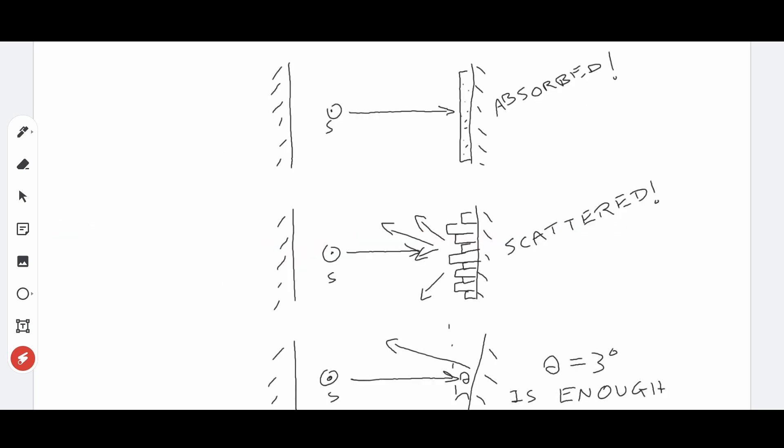There are a few ways to work around this. Absorbing only one of the parallel surfaces can stop the flutter echoes from happening. Also adding diffusers can help. Even if the surfaces have an angle of 3 degrees between them, it is sufficient to avoid flutter echoes from happening.